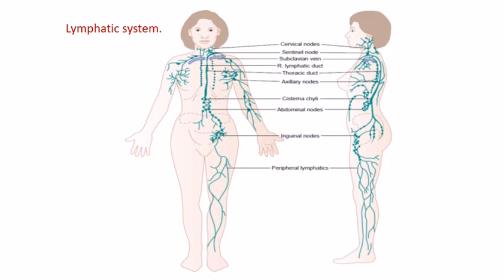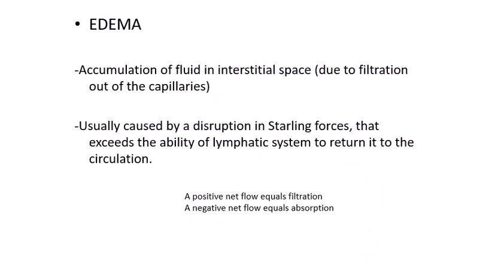The lymphatic system continuously drains interstitial fluid to create a negative suction balance and to avoid accumulation of fluid within the interstitial spaces. The anatomy of this system will be studied in detail in anatomy; here we focus on the physiology of the lymphatic system.